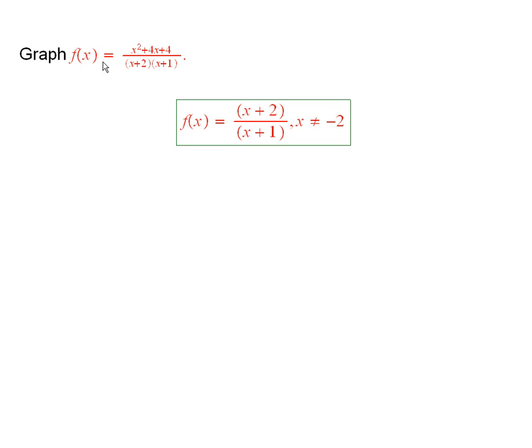I want to graph this function x squared plus 4x plus 4 divided by x plus 2 times x plus 1. Now you notice that the function is not defined when x is equal to negative 2 or when x is equal to negative 1.